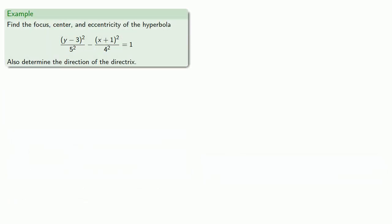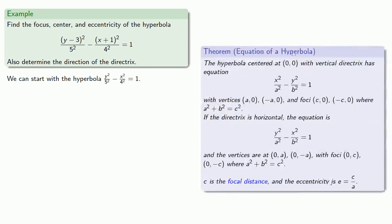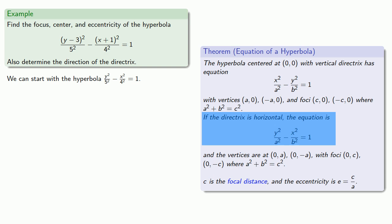For example, let's consider this hyperbola. We can start with hyperbola y²/5² - x²/4² = 1. This is a hyperbola with a horizontal directrix.